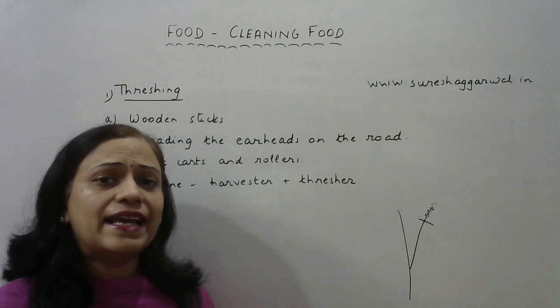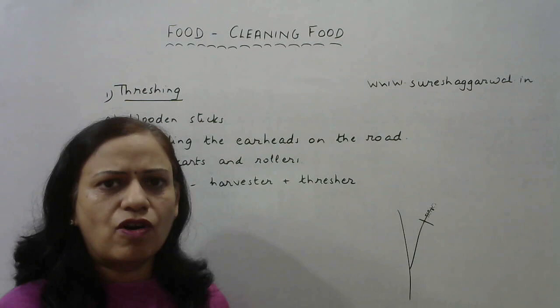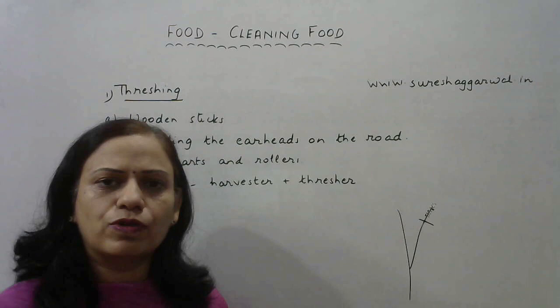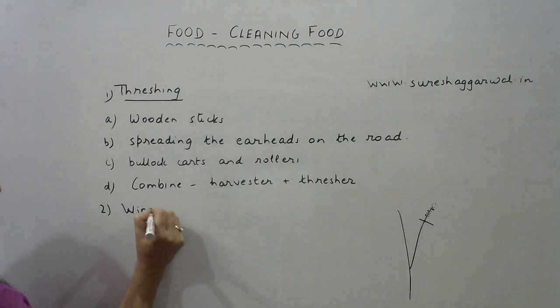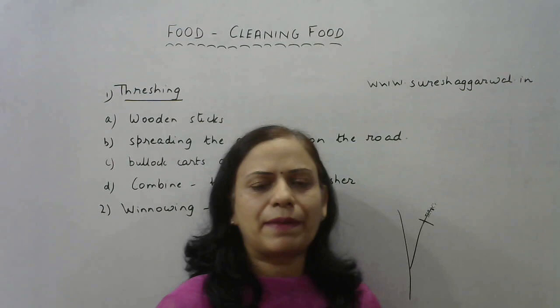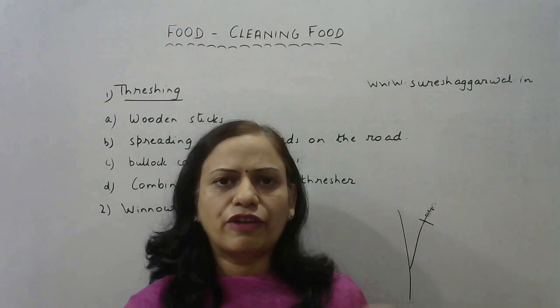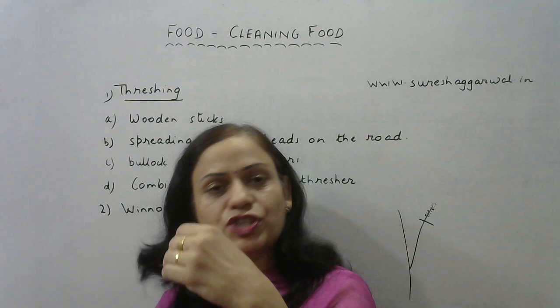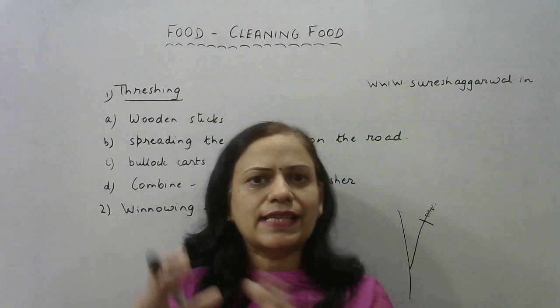Once the grains have been separated from the parent plant, they need to be cleaned, because during threshing some hay or shaft also goes along with the grains. The process used to remove this is known as winnowing. The grains and shaft are placed in a flat utensil and shaken — the heavier grains fall straight down while the lighter shaft is blown away by the wind, resulting in two separate heaps.